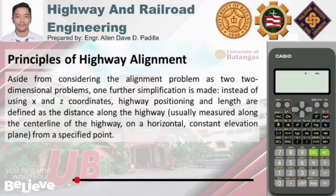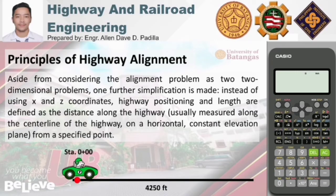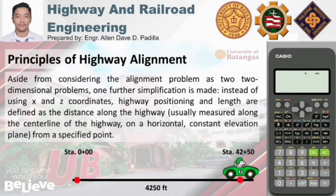For example, let's say we have a specified point at station 0+000, and we are to determine the stationing of a point 4,250 feet from that specific point. Its stationing would be 42+50, because the English system is used here. For one station, there are 100 feet. So if the distance is 4,250 feet, that point is at station 42+50 in reference to station 0+000.